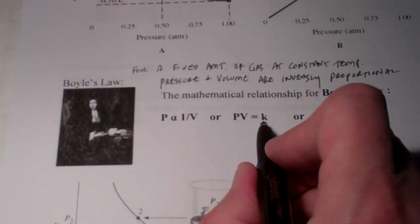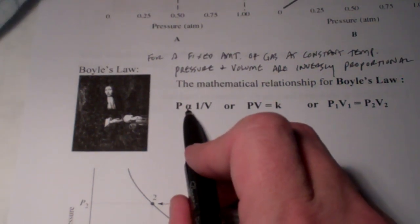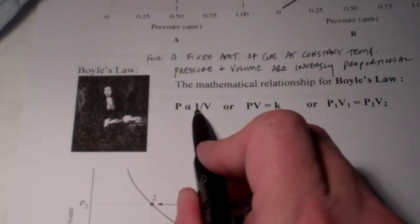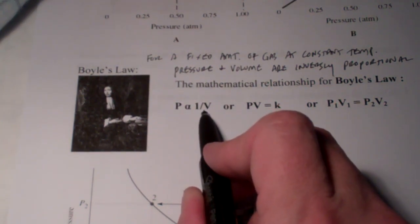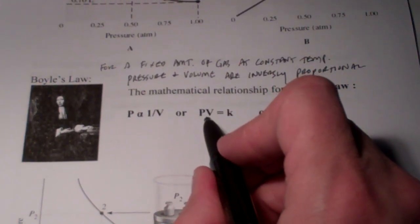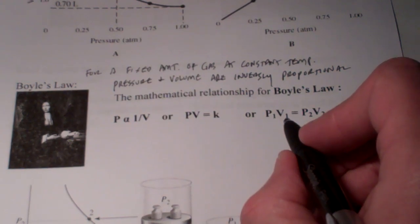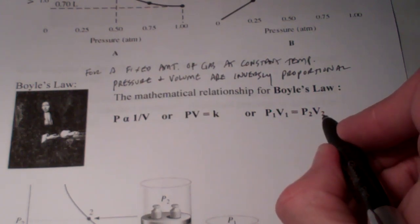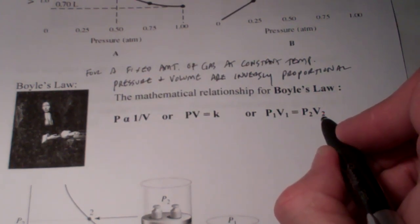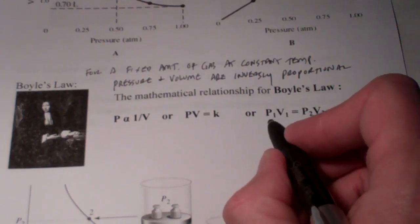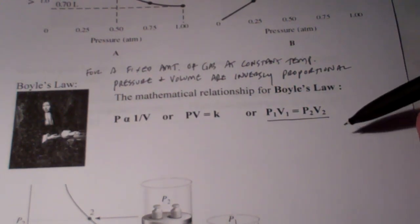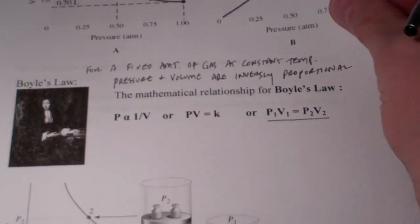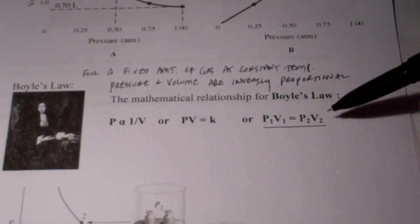The mathematical relationship, as we said, is PV equals a constant. We could say that pressure is inversely proportional to volume. And the way we say that is with this symbolism. That's a proportionality sign. 1 over V is inversely proportional. Or, since PV equals K, can't I take the pressure and volume at one situation and it'll equal the numerical value? Shouldn't that equal the pressure and volume at another situation so long as the temperature and the amount of gas are held constant?